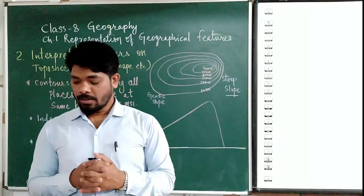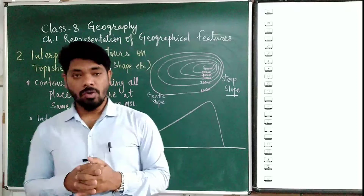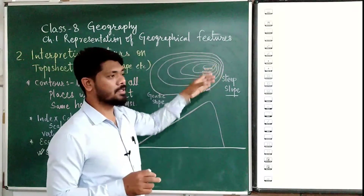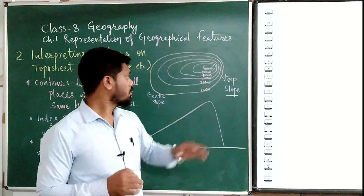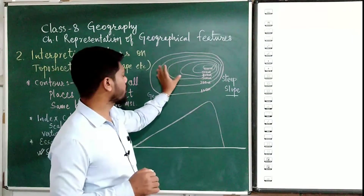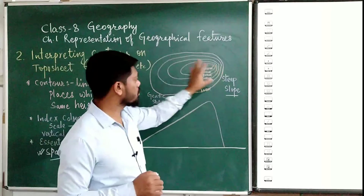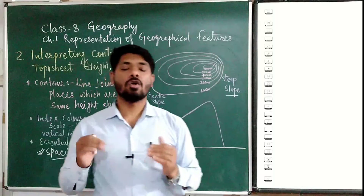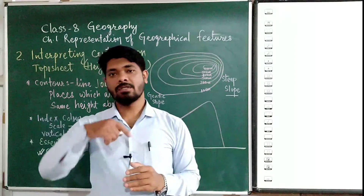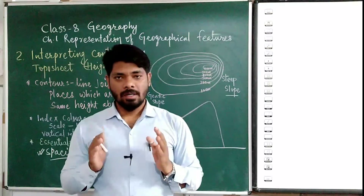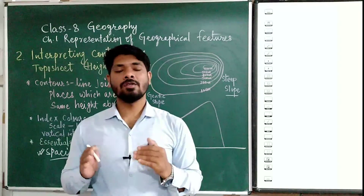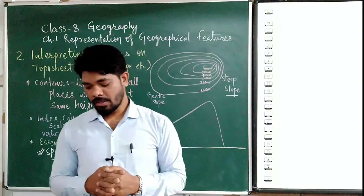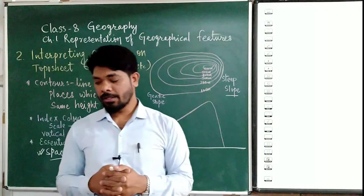If the contour lines are uniform on both sides — meaning the spacing gap is the same on both sides without one side being close and the other far — this indicates a conical hill. A conical hill means the height of the hill rises uniformly in all directions, as you can see in the diagram.